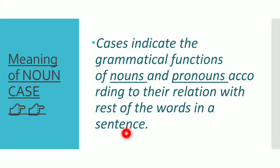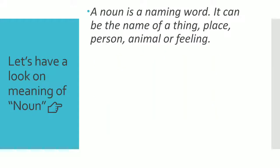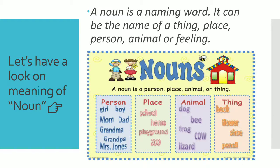Before going into detail on noun cases, let's have a quick look at some integral topics: noun, pronoun, and sentence. First, what is a noun? A noun is a naming word — it can be the name of a thing, place, person, animal, or feeling. For example: girl, boy, mom, school, playground, dog, book, flower — all of these are nouns.